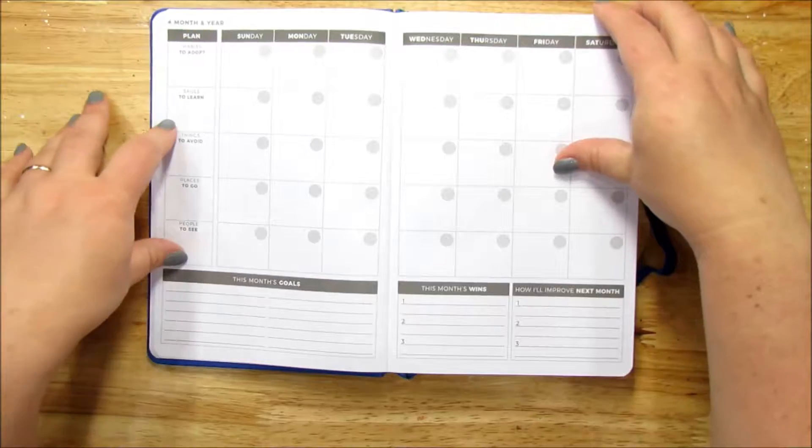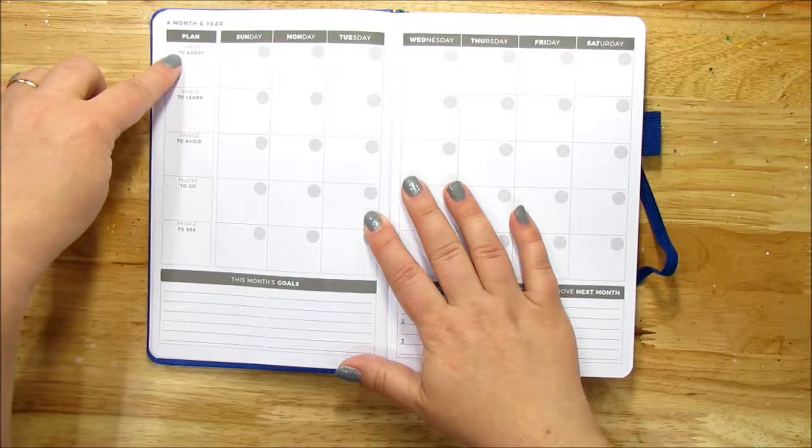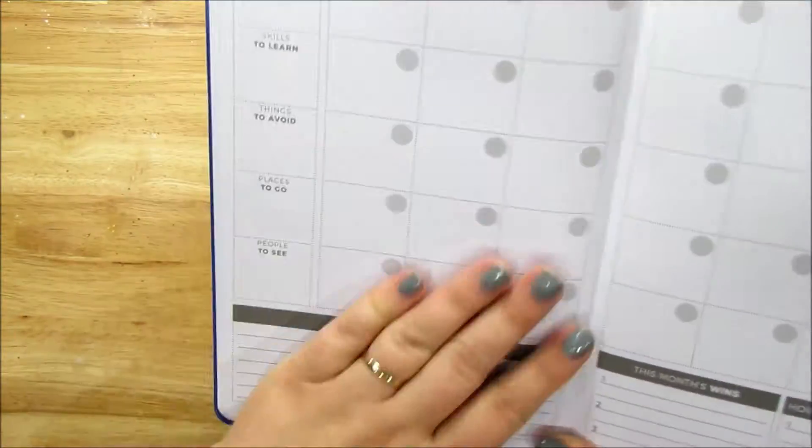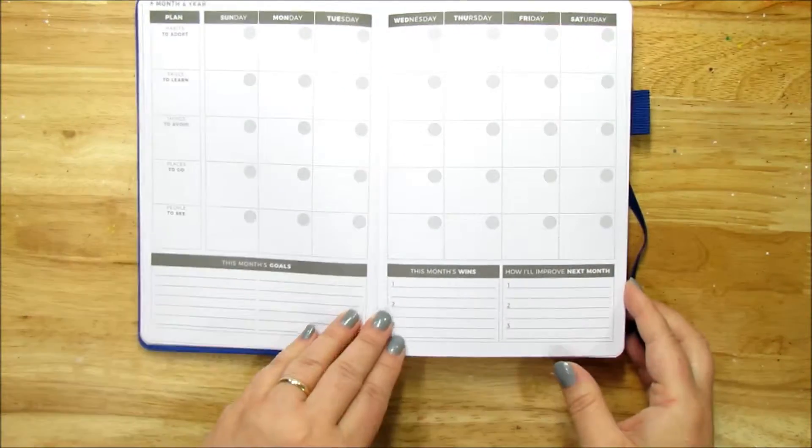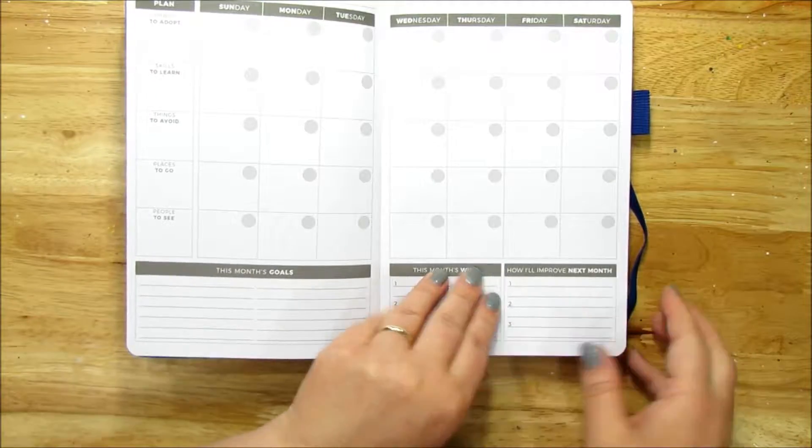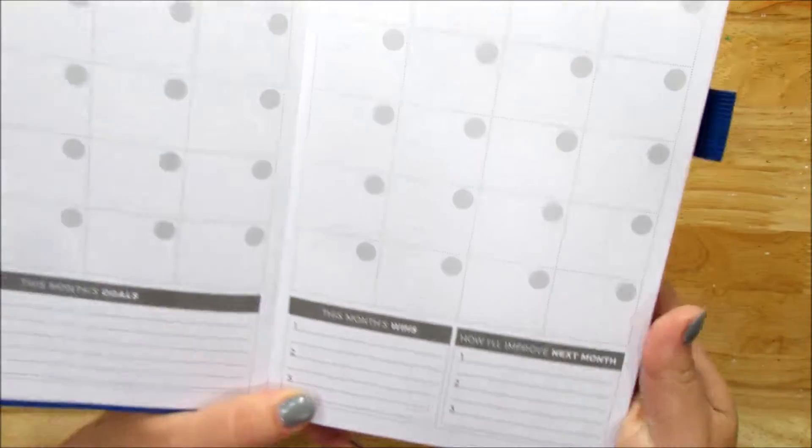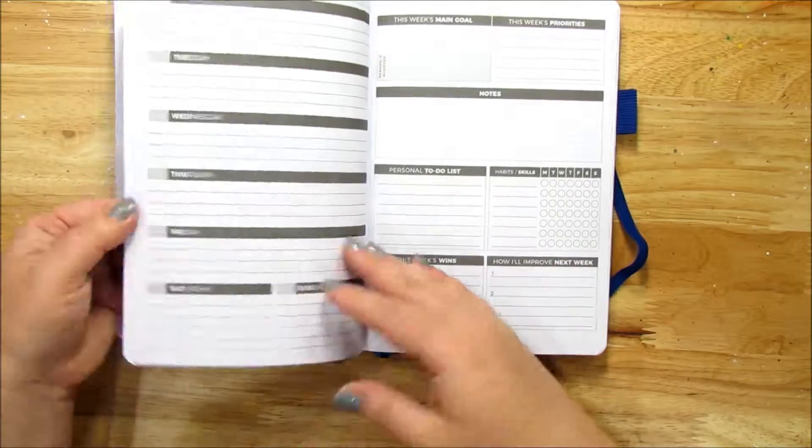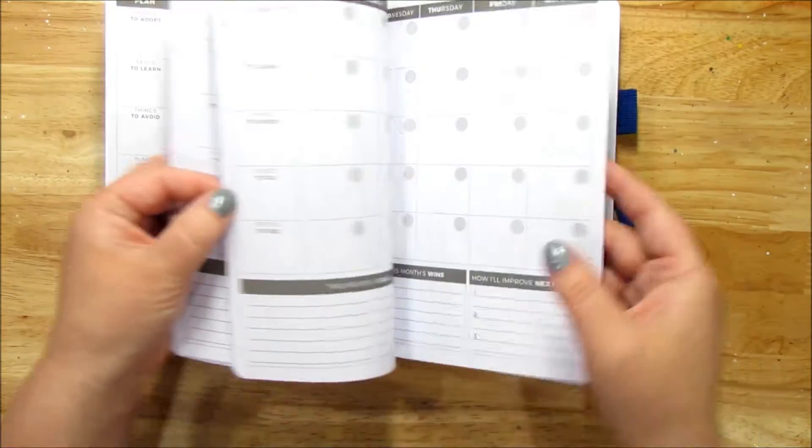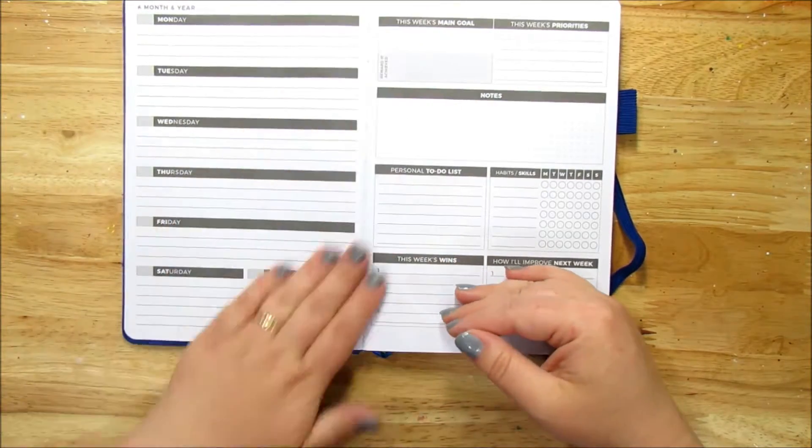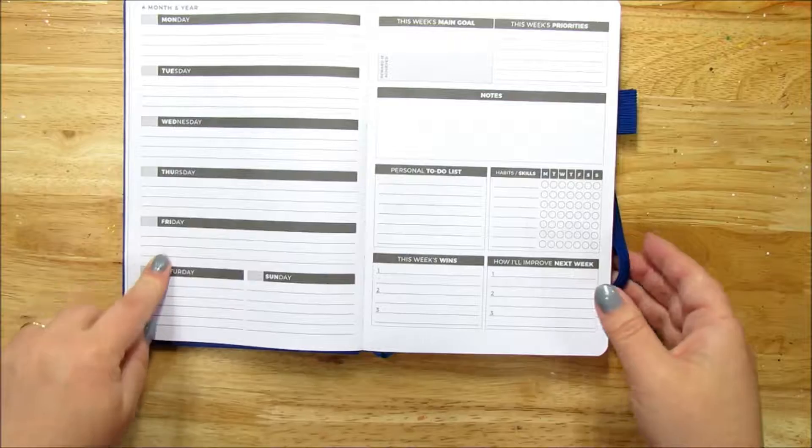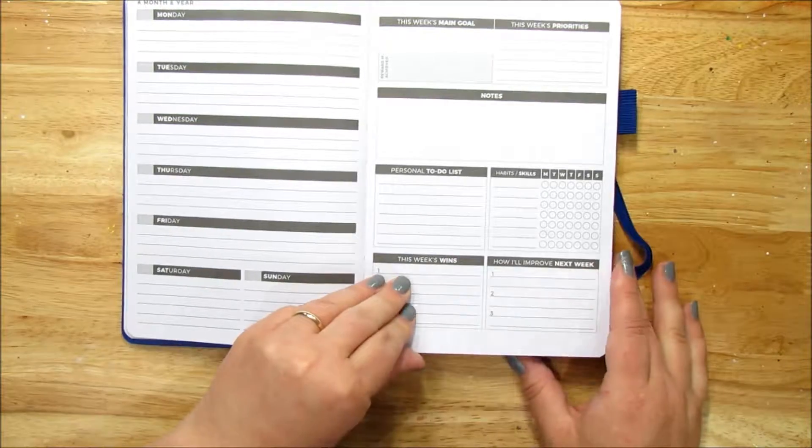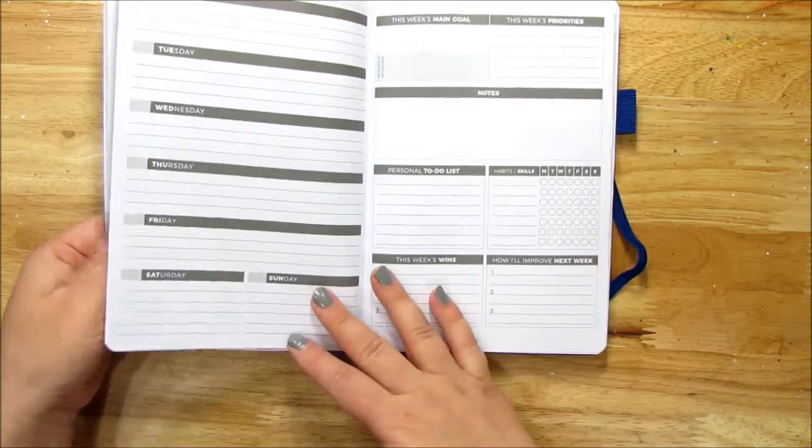So you have a calendar here with habits to adopt, skills to learn. Things to avoid, places to go, people to see. And I really like all of these things. I've got monthly goals and wins and how I'll improve next month, which I really like that too. How I'll improve next month is always a good question. It's a lot of self-reflection and I absolutely approve of that. So we've got this each month like this. Then we flip over here and it looks like it's a weekly. So we've got days of the week here and Saturday, Sunday, main goal, weeks priorities, notes, personal to do list, weeks wins, how I'll improve next week. Oh, I really like this. This is terrific.